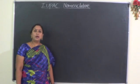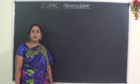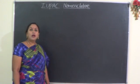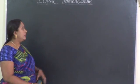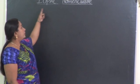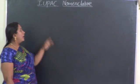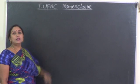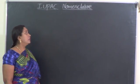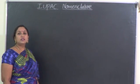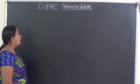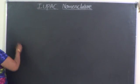In the last class we learnt about homologous series and functional groups in detail. In this class, let us learn about IUPAC nomenclature. The term IUPAC stands for International Union of Pure and Applied Chemistry. This board has given us a certain set of rules for naming organic compounds. Let us learn them one by one.